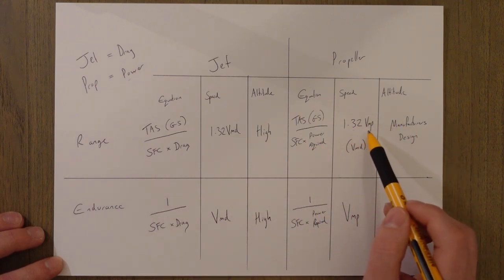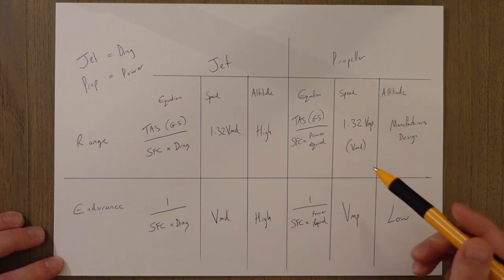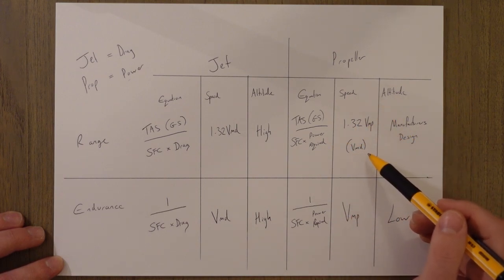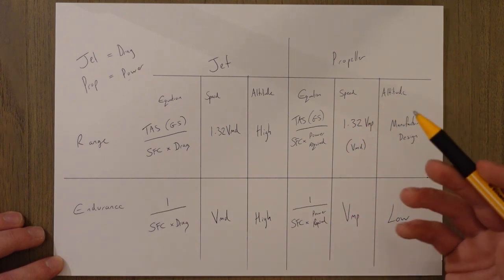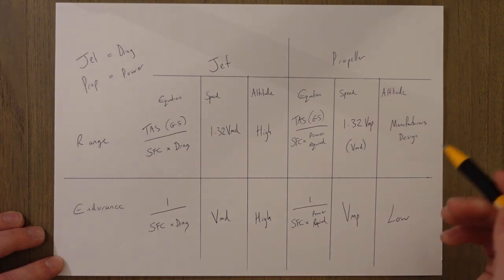And if we think about a propeller it's the same equation except we're substituting in power required instead of drag. The speed for that is at 1.32 Vmp which just so happens to be the speed for minimum drag and the altitude depends on the manufacturer's design but it's basically where we have the throttle open.